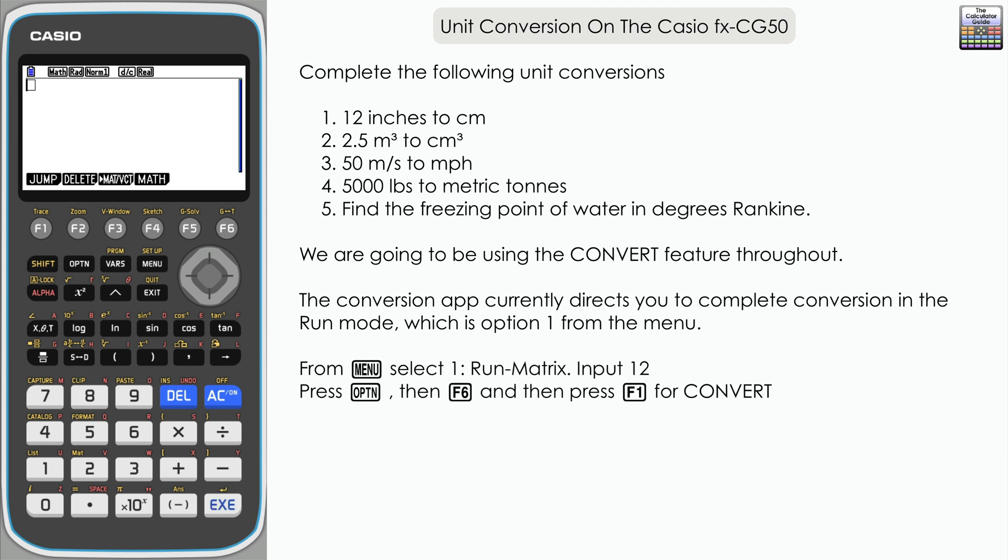Let's start with the first one: 12 inches to centimeters. Maybe you have an idea about this if you think about the length of a long ruler. Let's use the calculator to complete this. Input 12 and then we want to go to the option menu.